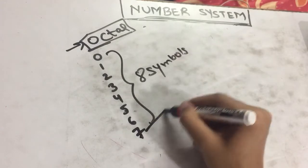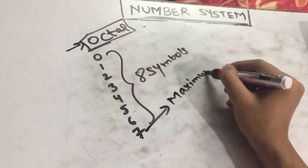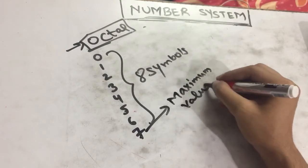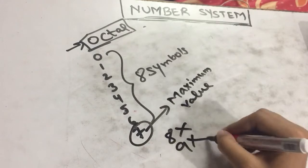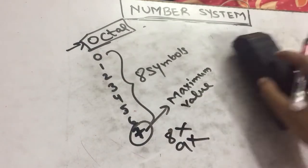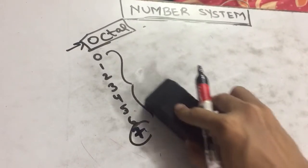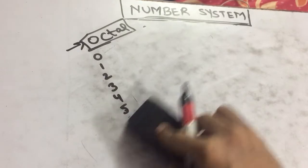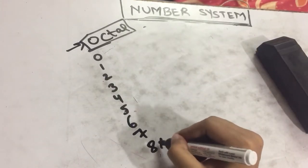7 is the maximum value. 7 is the highest number - we can't use 8 or 9. The maximum number which we can use is 7, so after 7 we can't write 8, it will be wrong.